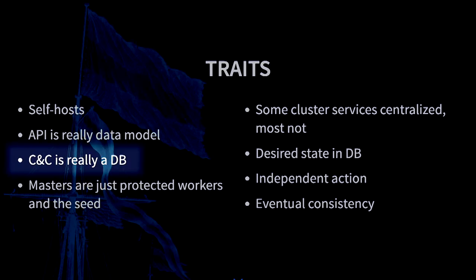The API is really just a representation of that data model. It's not technology-based. It is based on what do you want your infrastructure to be doing — what services you want it to be providing, how you want it to scale, et cetera. The command and control, similarly, is a representation of what the world should look like. It's really just that database.